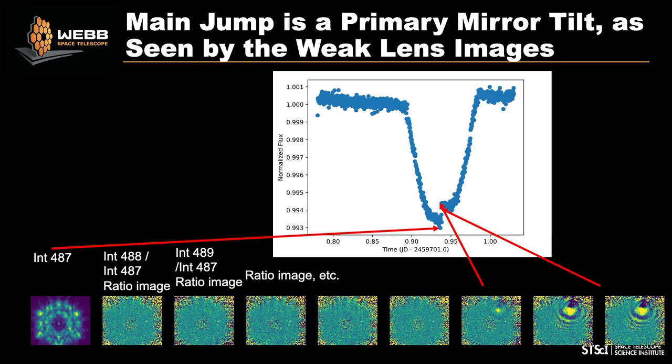Several folks suggested looking at the short wavelength time series images. Looking at this on a plane before it took off, I saw a big signal and knew what it was but couldn't say until landing. The left shows the weak lens plus a time point spread function — a hexagonal shape resembling the primary mirror. The ratio images along the bottom compared to a reference image show that right at the time of the jump, there's a change in the point spread function. This is a primary mirror segment tilt event.